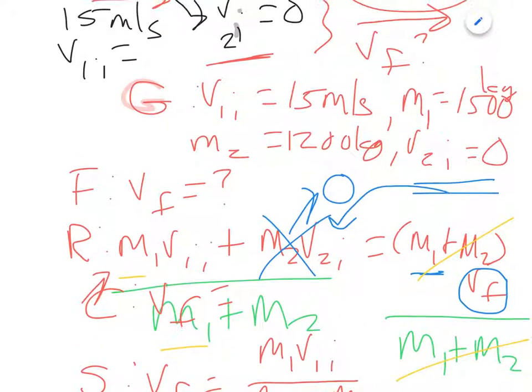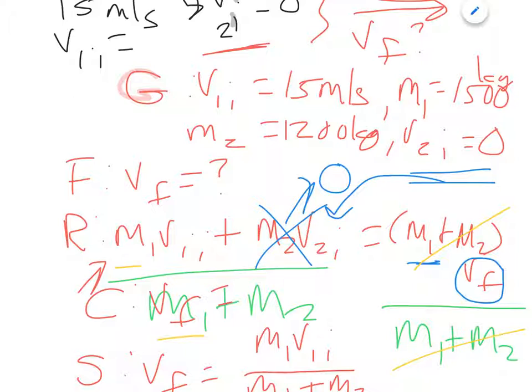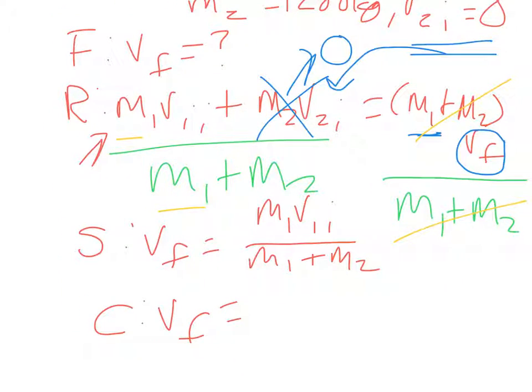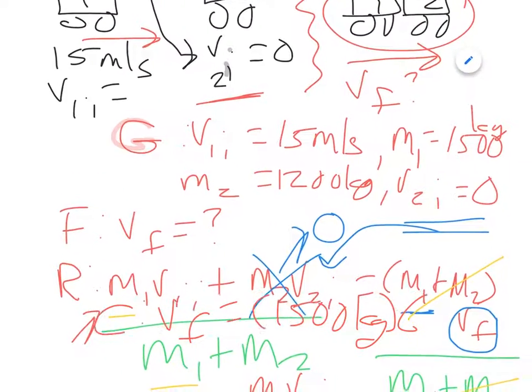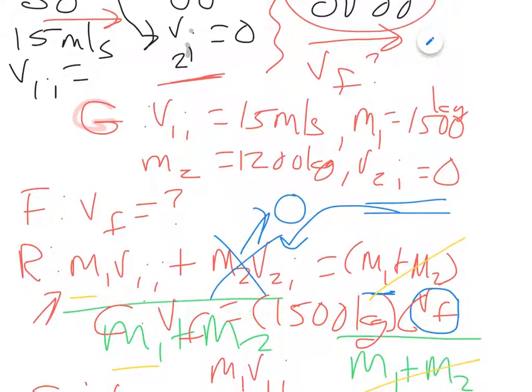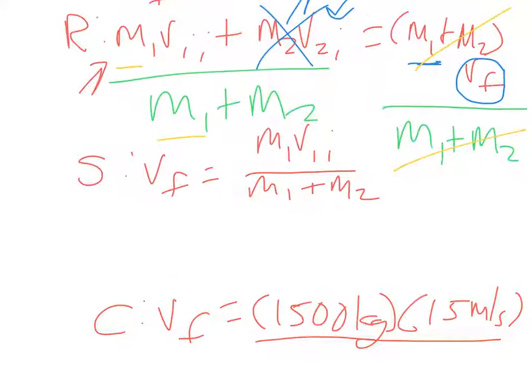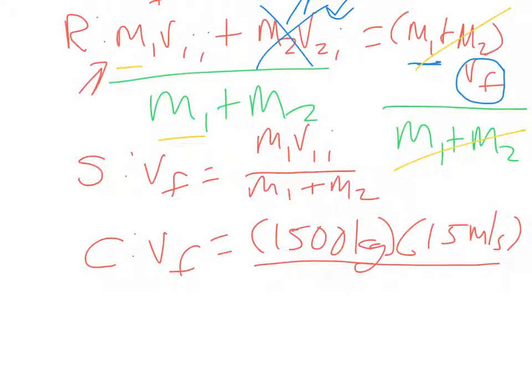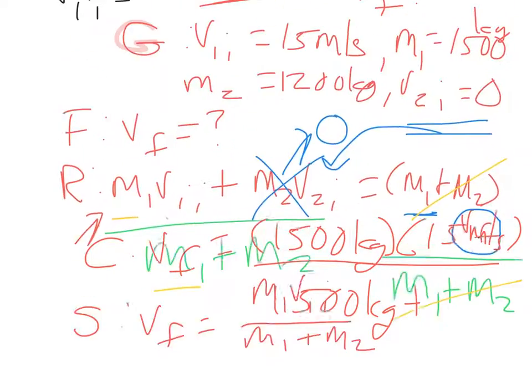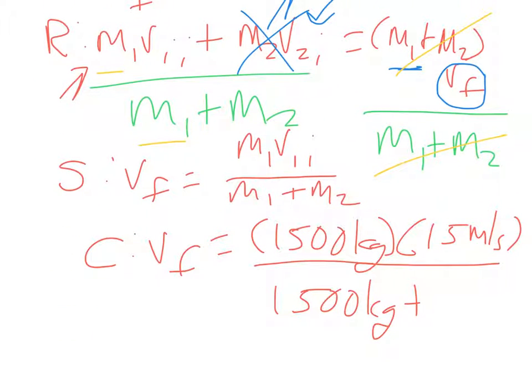So when I plug in the numbers, we have VF is equal to, M1 is 1,500, so I've got 1,500 kilograms times the speed of that thing, which is 15 meters per second, times 15 meters per second. And then it's all divided by M1, which was 1,500 kilograms plus 1,200 kilograms.